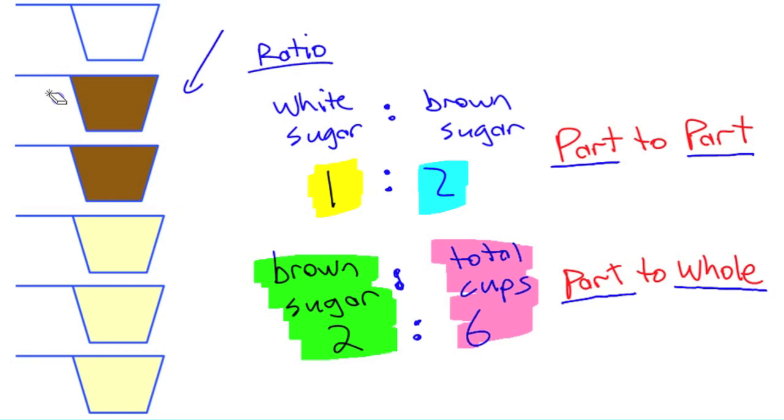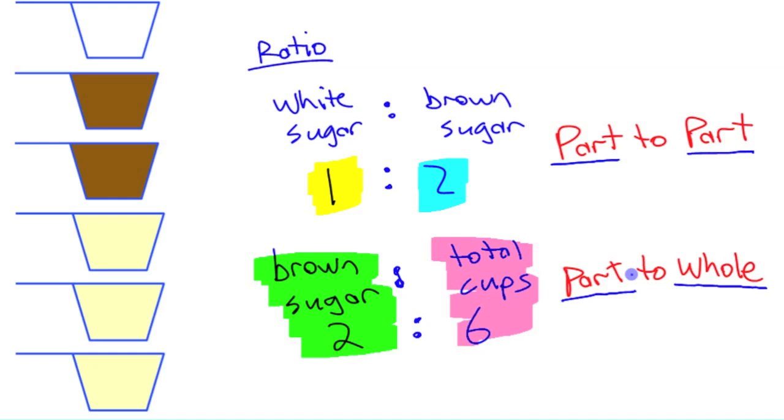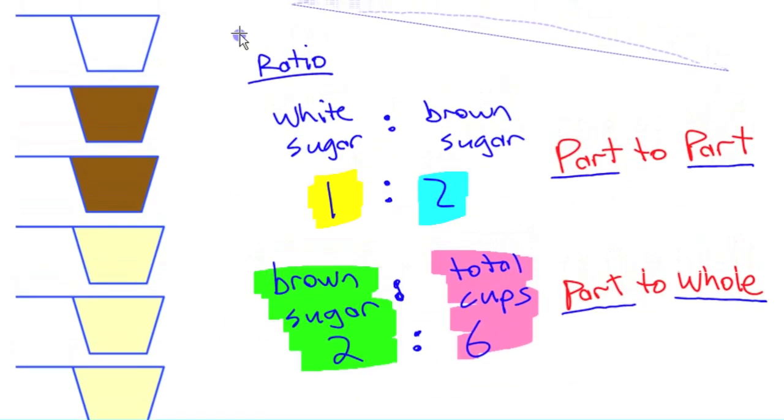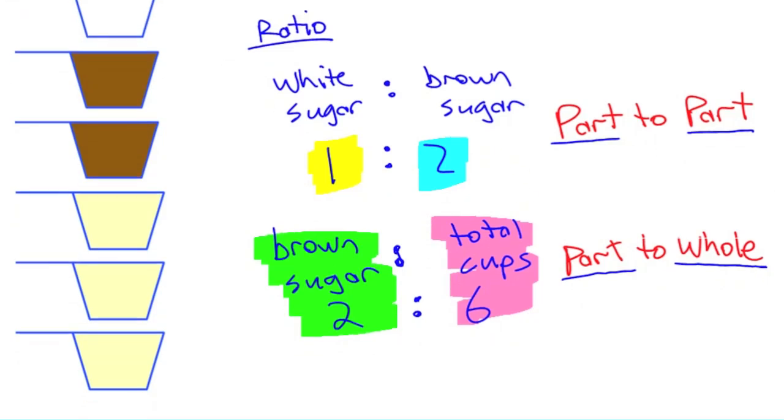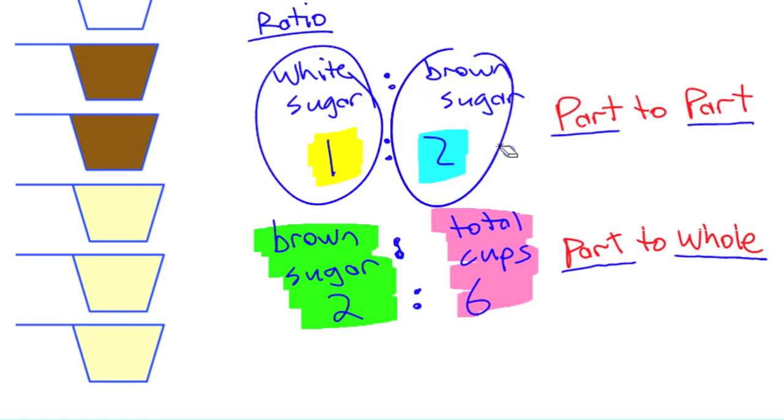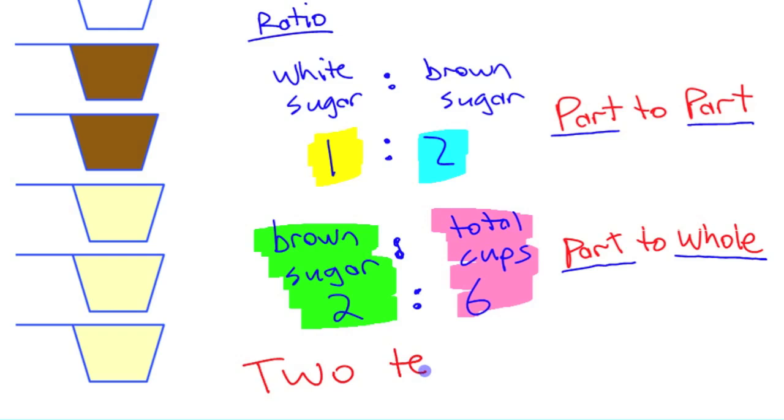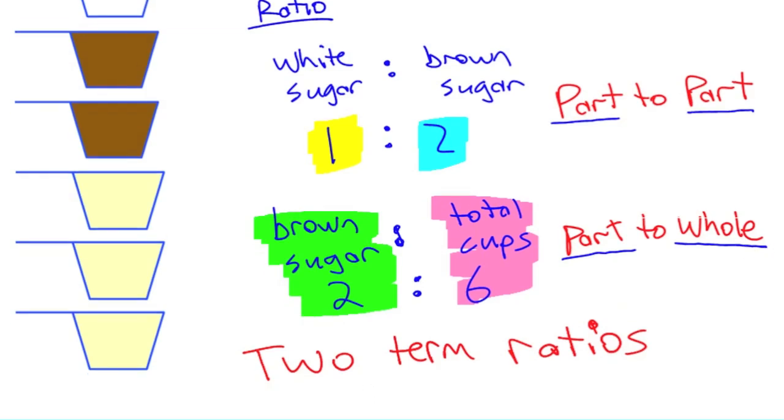Now a couple other terms. The two ratios that we wrote here so far, each this compares two things. That thing to that thing. These are two term ratios. Two term ratios. Because you're comparing, there's two terms in them.